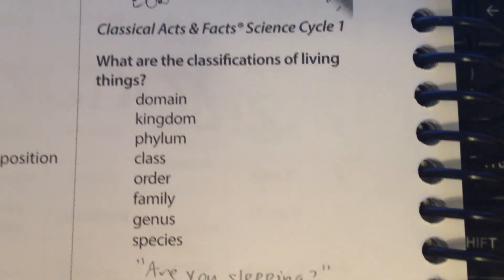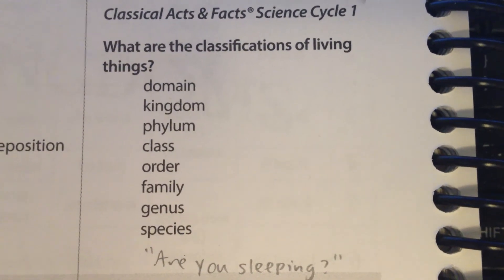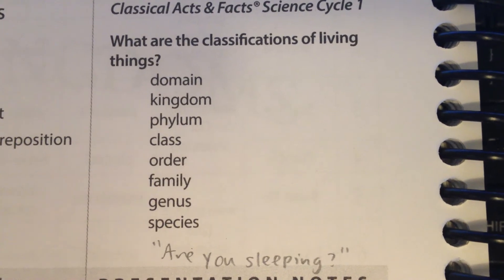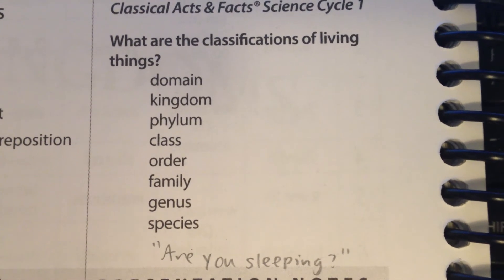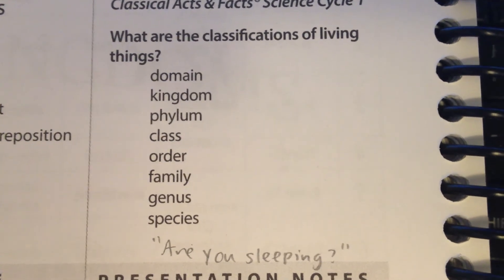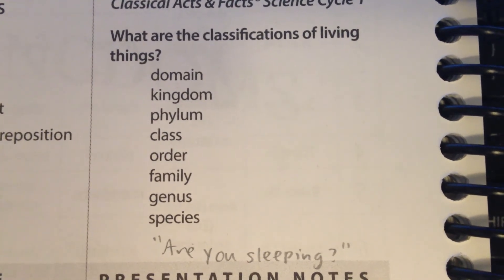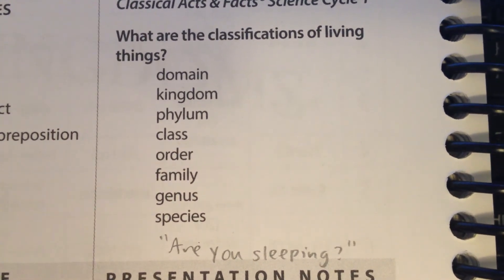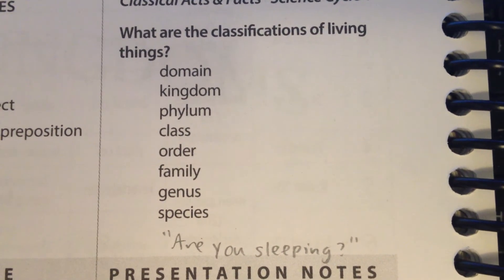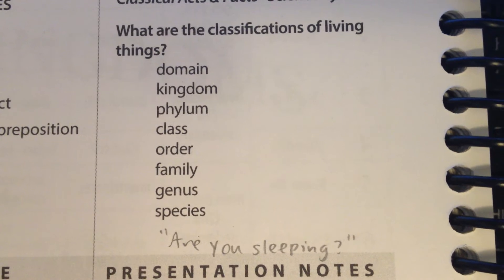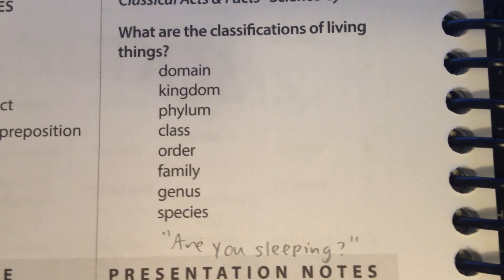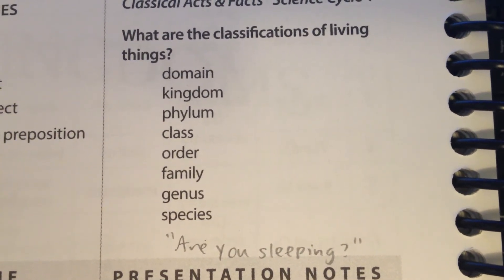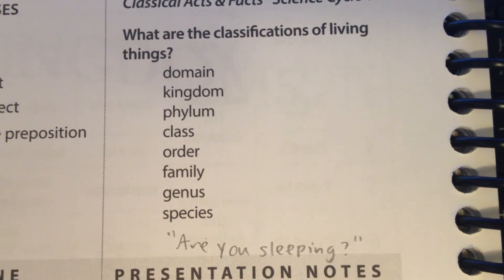What are the classifications of living things? Domain, kingdom, phylum, class, order, family, genus, species. What are the classifications of living things?